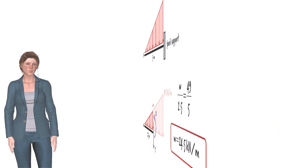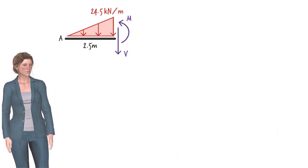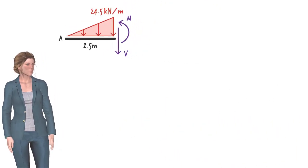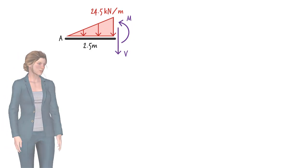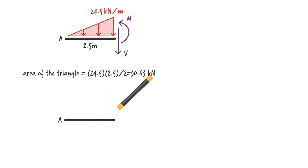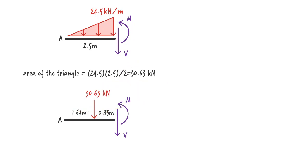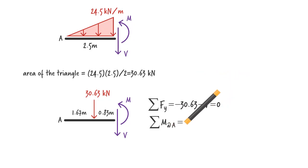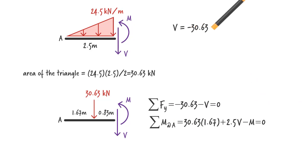So the triangular load has a height of 24.5 kN per meter at the cut point. Before writing the equilibrium equations, let's replace the distributed load with its equivalent concentrated load, the magnitude of which is the area of the triangle, and its location is the geometric center of the triangle. Now we can write the equilibrium equations. Solving them for the unknown forces, we get the shear and moment at the midpoint.